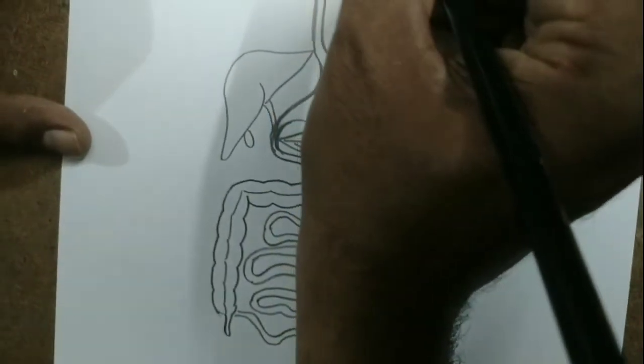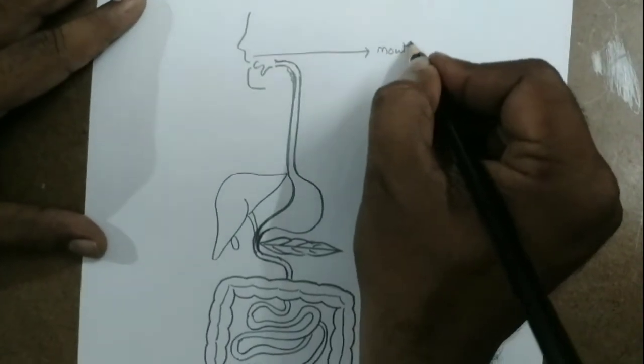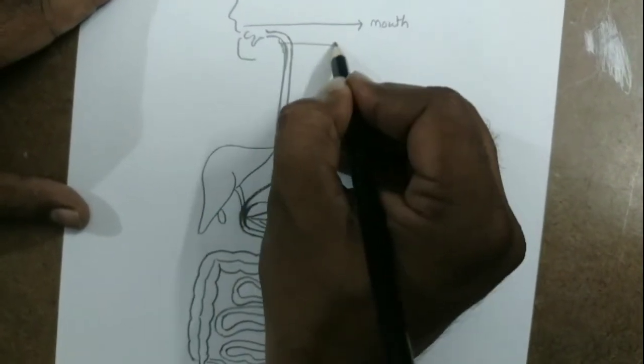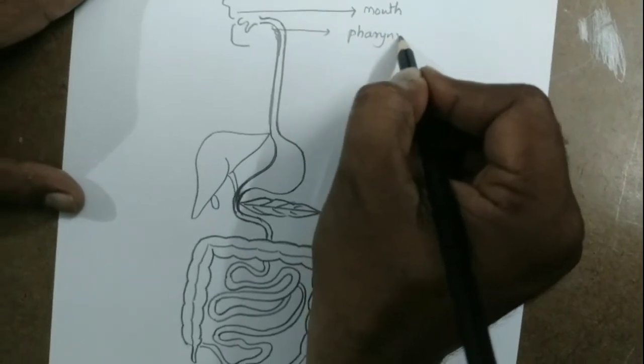This is the simple diagram of the human digestive system. Let's go for the labeling. First is mouth, next is pharynx.